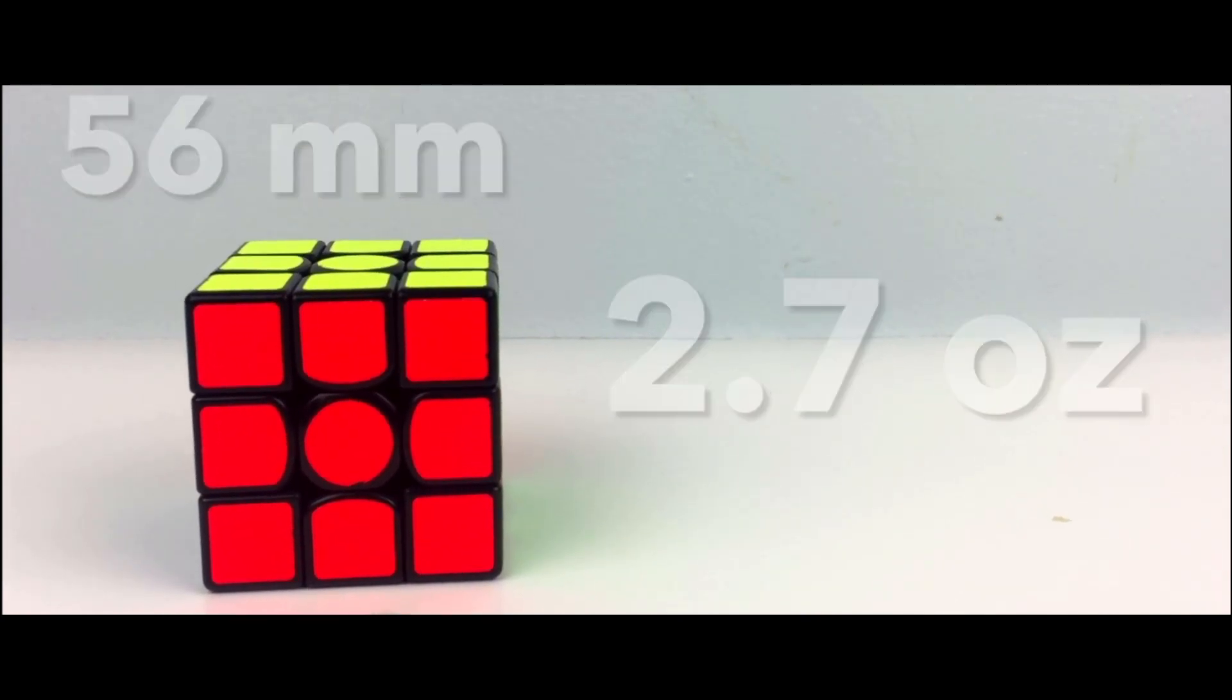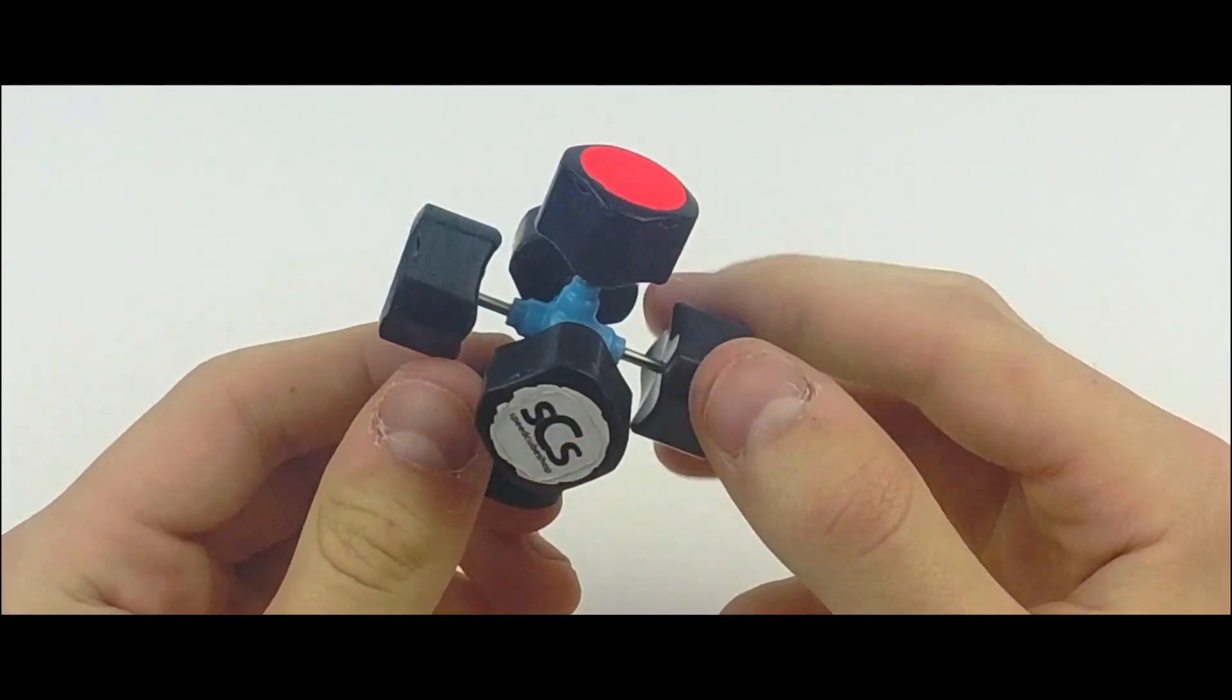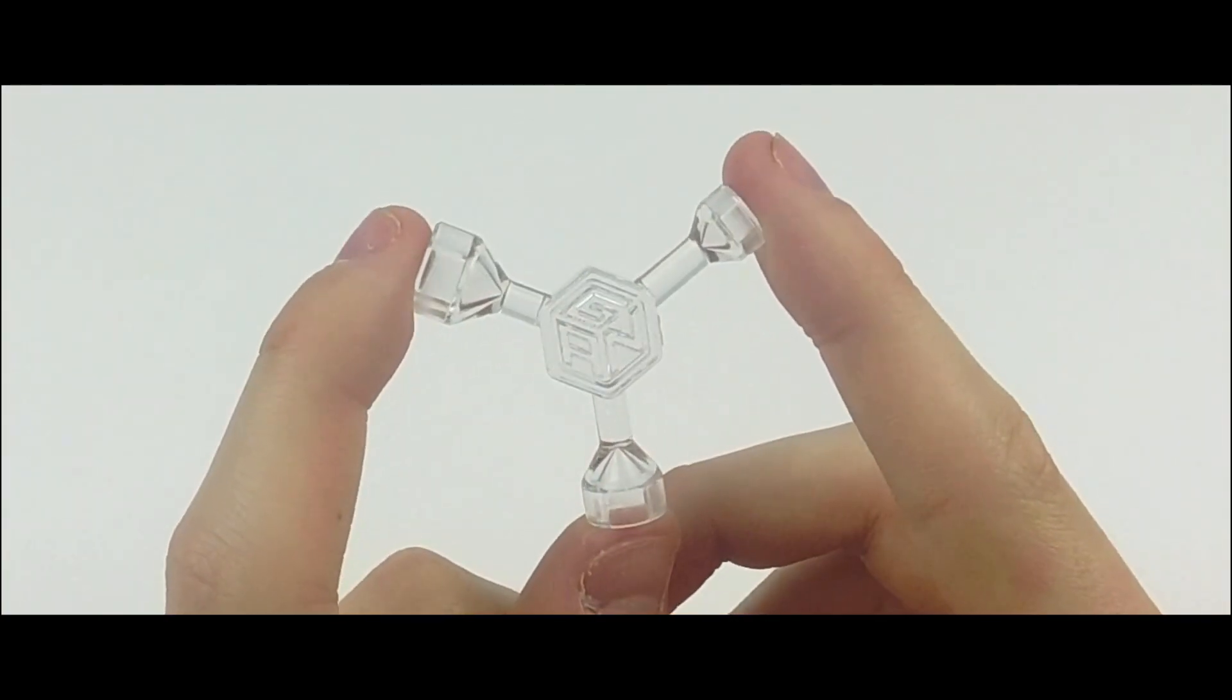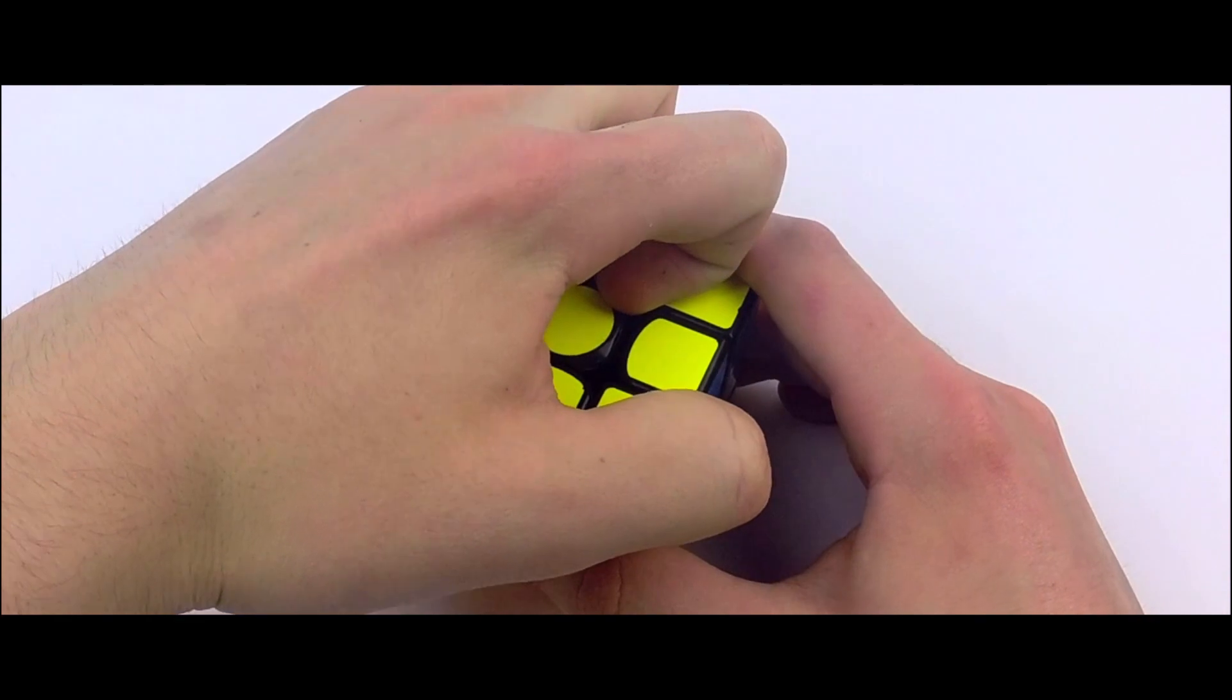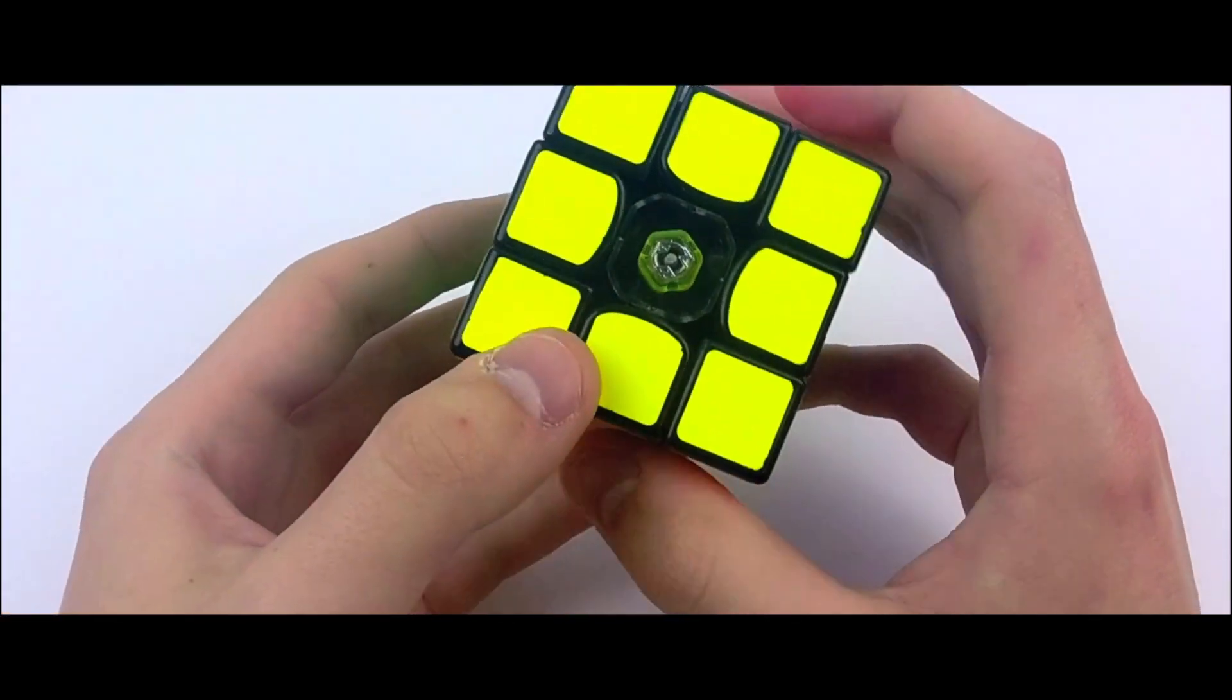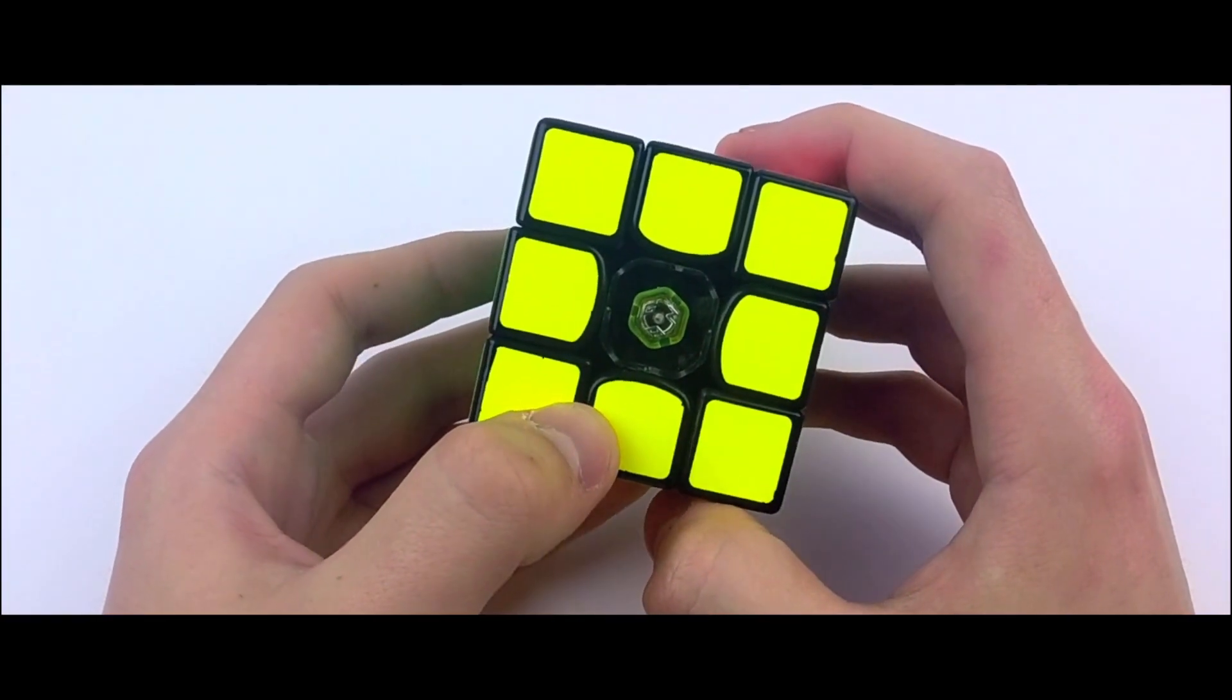The cube uses GAN's custom core system, and comes with a tensioning tool and 7 different tensions of GES nuts, ranging from purple the loosest to red the tightest. I personally prefer yellow, but the different colors give you a lot of freedom to customize the cube to your preference.